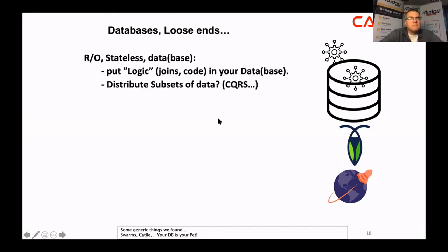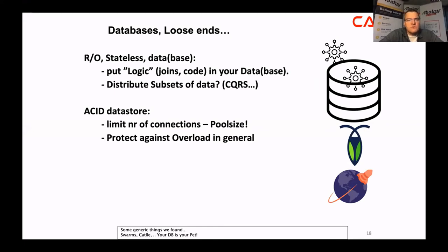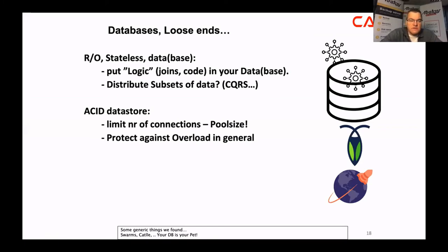Some loose ends: even for stateless databases with read-only data, there is an advantage to having a database with joins rather than a comma-separated file. CQRS was not a bad idea — it just came from the wrong context. If you have an ACID data store, watch out for pool size. If you deploy microservices with default Java, it will generally create 20 to 50 connections on startup — but the microservice only ever runs one thread. You don't need 49 idle connections.